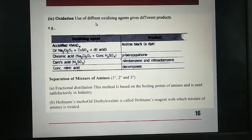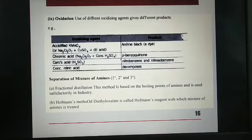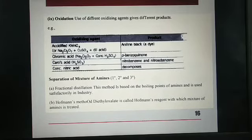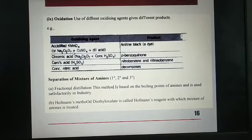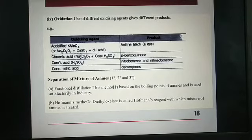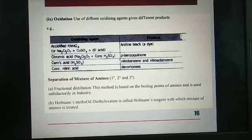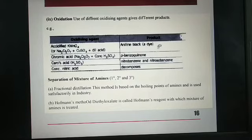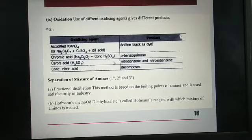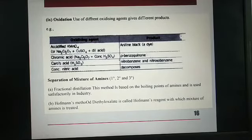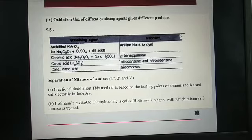Oxidation: use of different oxidizing agents gives different products. In presence of acidified KMnO4 or Na2Cr2O7 plus CuSO4 plus dilute acid, it gives aniline black, a dye. In presence of chromic acid, it gives para-benzoquinone. In presence of Caro's acid, H2SO5, it gives nitrobenzene and nitrosobenzene. Concentrated nitric acid decomposes aniline.